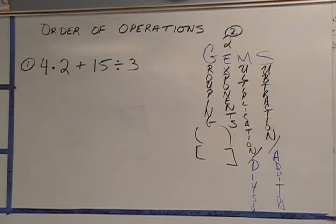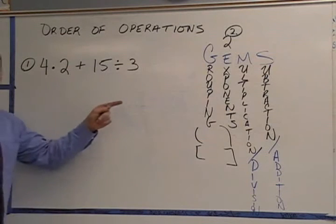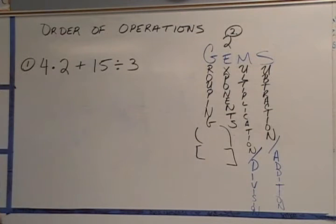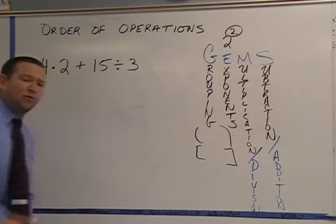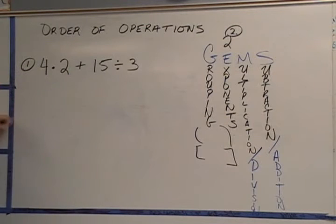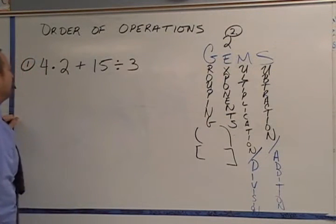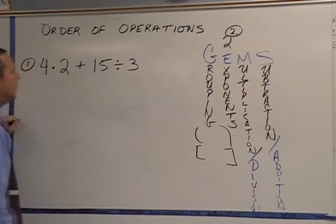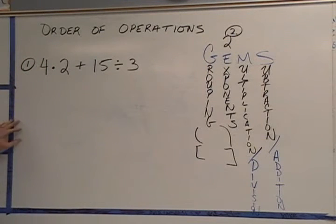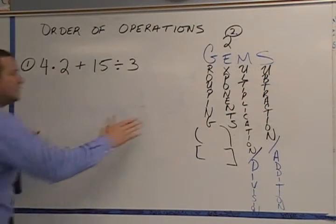We're going to need a little music to get us fired up for this problem. Go ahead and write it down on your paper. So we have 4 times 2 plus 15 divided by 3. Do we have any grouping parentheses or brackets in this problem? No, we don't. So we don't have to worry about this column. What about E exponents? Do you see any exponents in this problem? No. This problem's not going to be too bad.